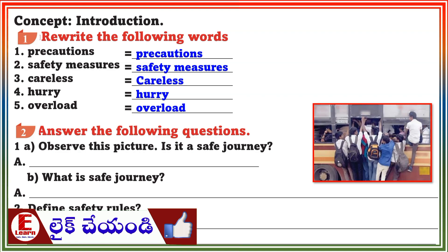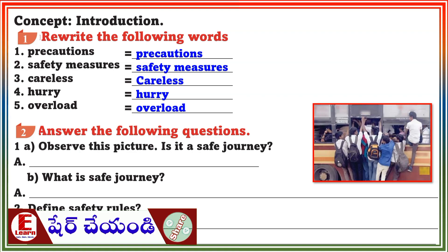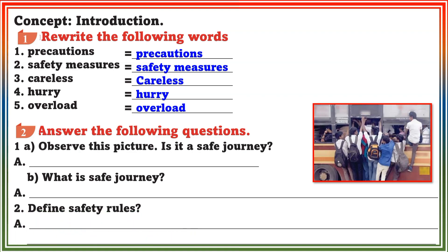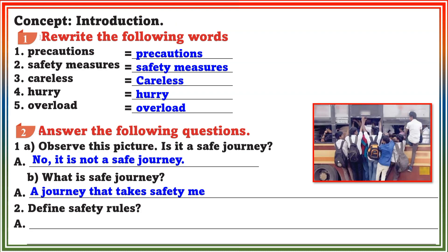Section 2: Answer the following questions. Question 1: Observe this picture. Is it a safe journey? Answer: No, it is not a safe journey. B. What is a safe journey? Answer: A journey that takes safety measures is called a safe journey.